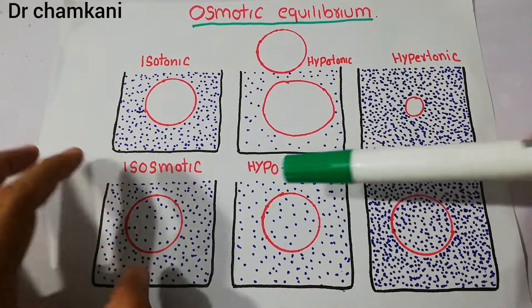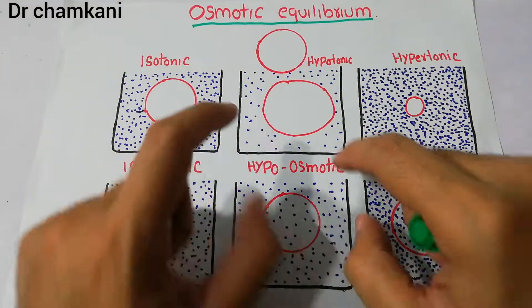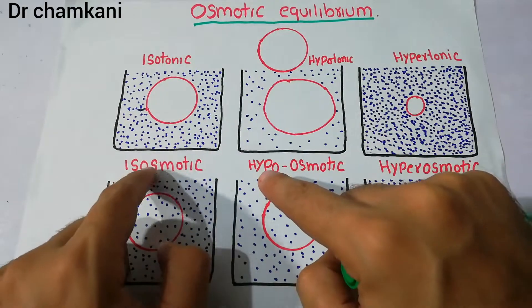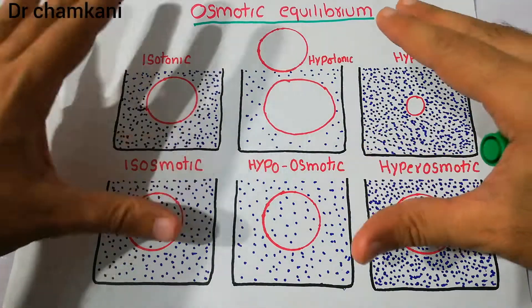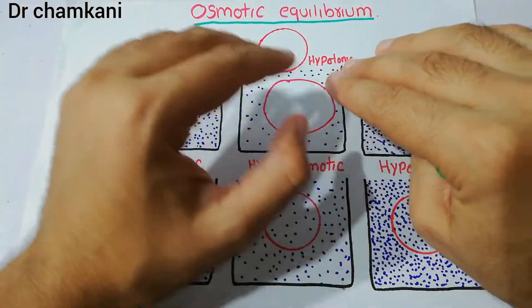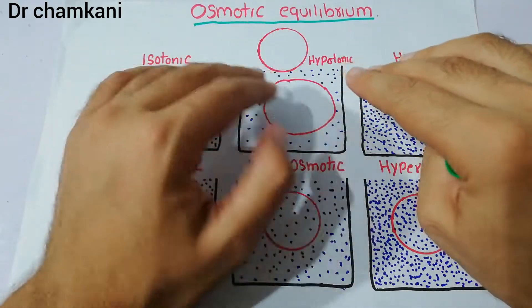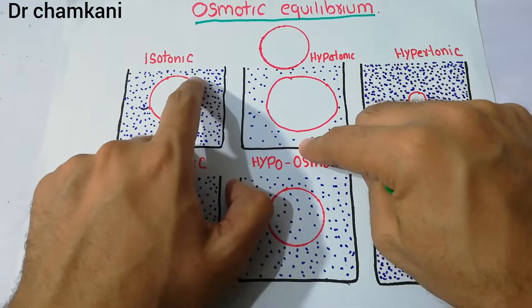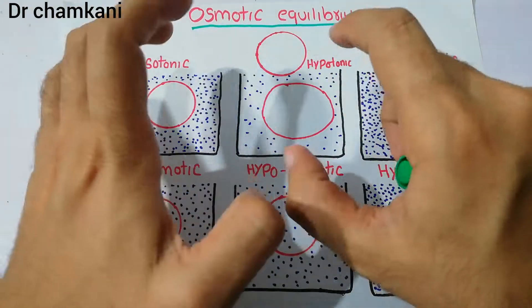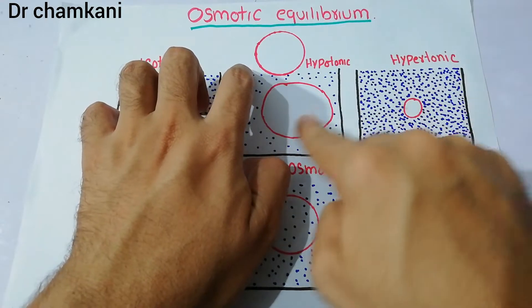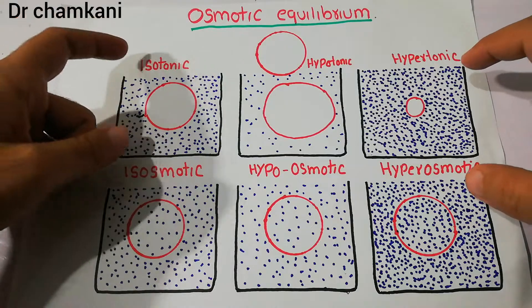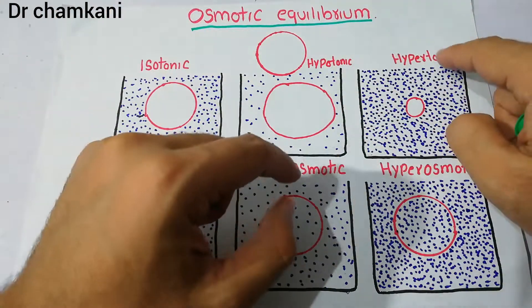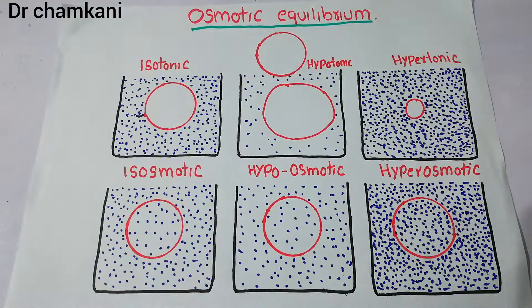So isosmotic, hypoosmotic, and hyperosmotic only refer to the concentration of fluids - there is no restriction on solute movement and no change in cell size. In isotonic, hypotonic, and hypertonic fluids, the cell membrane is impermeable to solute; only water moves, and these fluids bring changes in the size of the cell. That is the difference between isotonic and isosmotic, hypotonic and hypoosmotic, and hypertonic and hyperosmotic. Thanks a lot for watching the video.